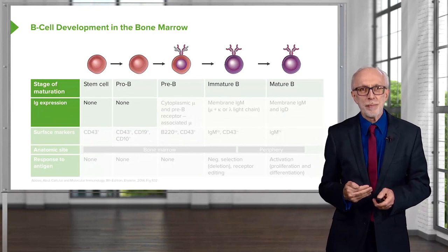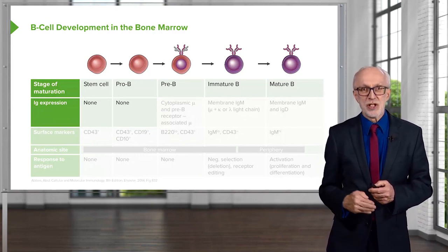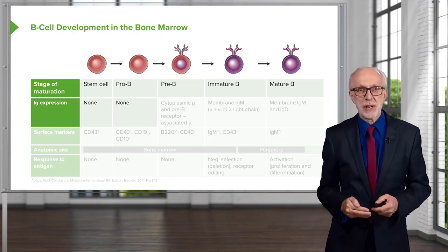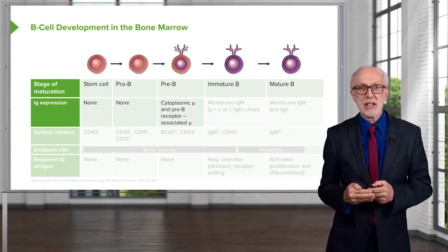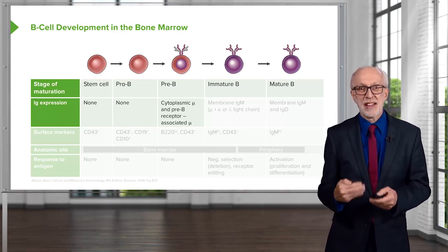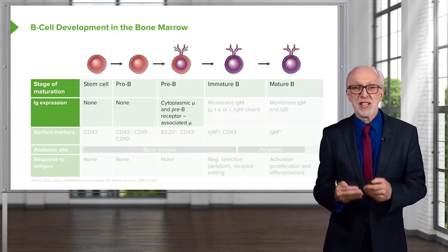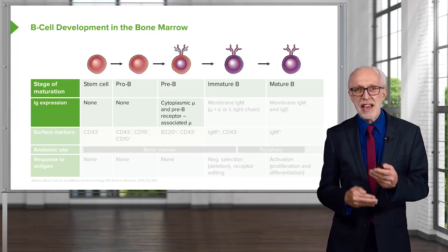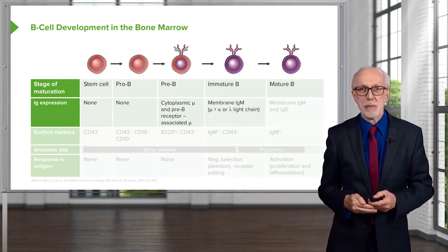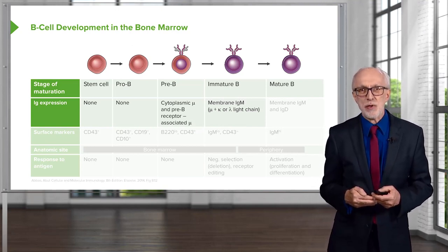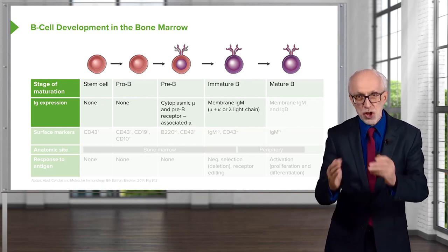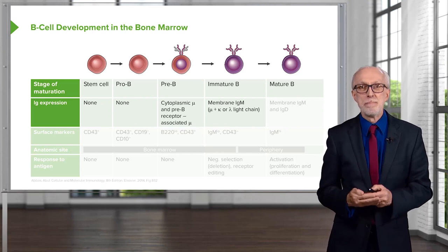Early on, immunoglobulin genes are not recombined, so there's no expression — they only recombine in B cells at the pre-B cell stage. The first indication that a cell is going to become a B cell is when it has cytoplasmic mu heavy chain. On the surface it has the pre-B cell receptor, which is a surrogate light chain — not the proper light chain, but an intermediate. Once the light chain genes have been recombined, you get the full mature antibody molecule on the surface of the immature B cell. This is membrane IgM.